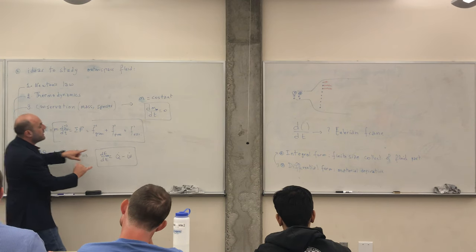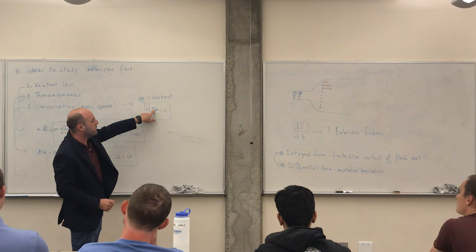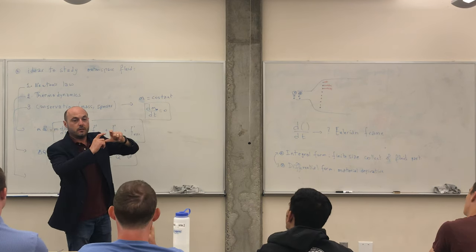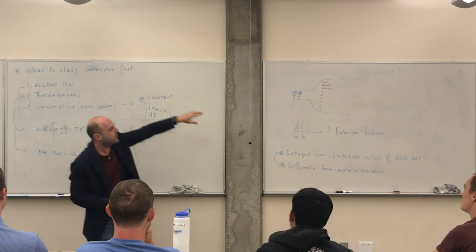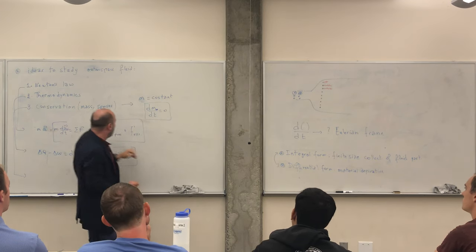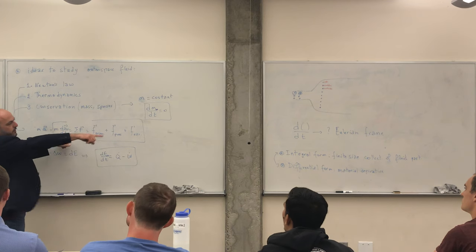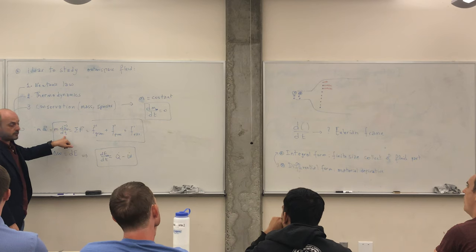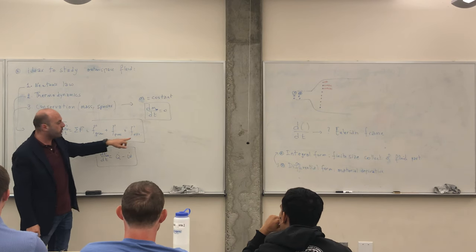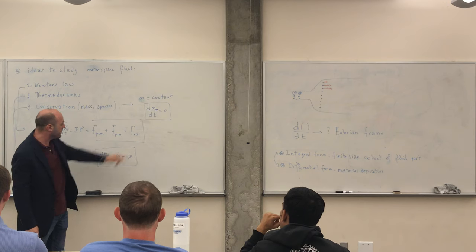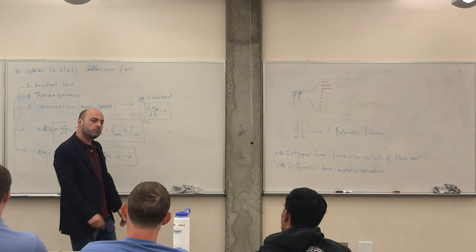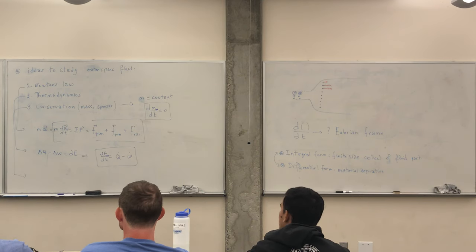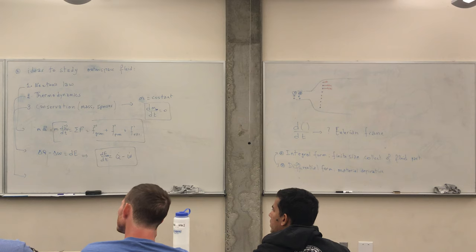The mass is rho times the volume of the system, and we'll convert this derivative into something related to velocities and densities. Once we have the Reynolds transport theorem or material derivative, the mass conservation equation becomes straightforward in Eulerian form. For the remainder of the course we'll deal with viscous forces. Your first homework assignment is going up on Canvas today — due midnight Monday, so early Tuesday morning.